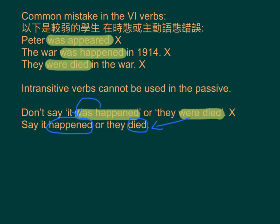Common mistakes with VI verbs. 以下是学生在被动语态或主动语态中出现的错误。Incorrect examples: 'Peter was appeared.' 'The war was happened in 1914.' 'They were died in the war.' Intransitive verbs cannot be used in the passive voice. Don't say 'It was happened' or 'They were died.' You should say: 'It happened.' or 'They died.'